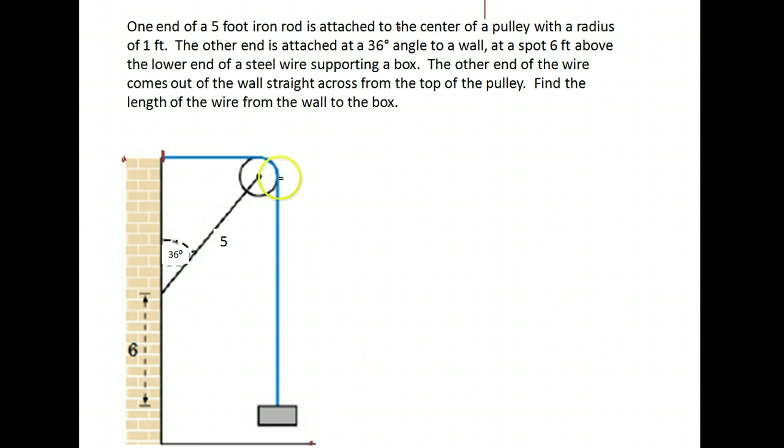We are asked to find the length of this wire which starts here, wraps around the top of this pulley, and goes down to the box. One length I can see is the easy part—this length here is 6 feet. Now we need to find this distance, the arc length here, and this distance here. We have an angle given, so we'll need to do something with that angle.